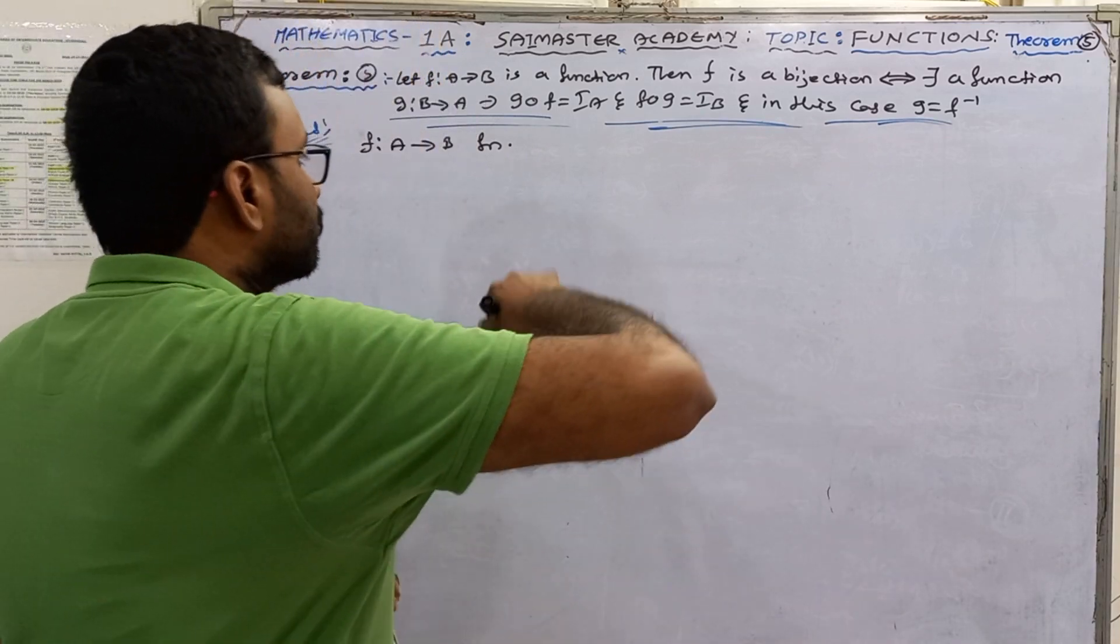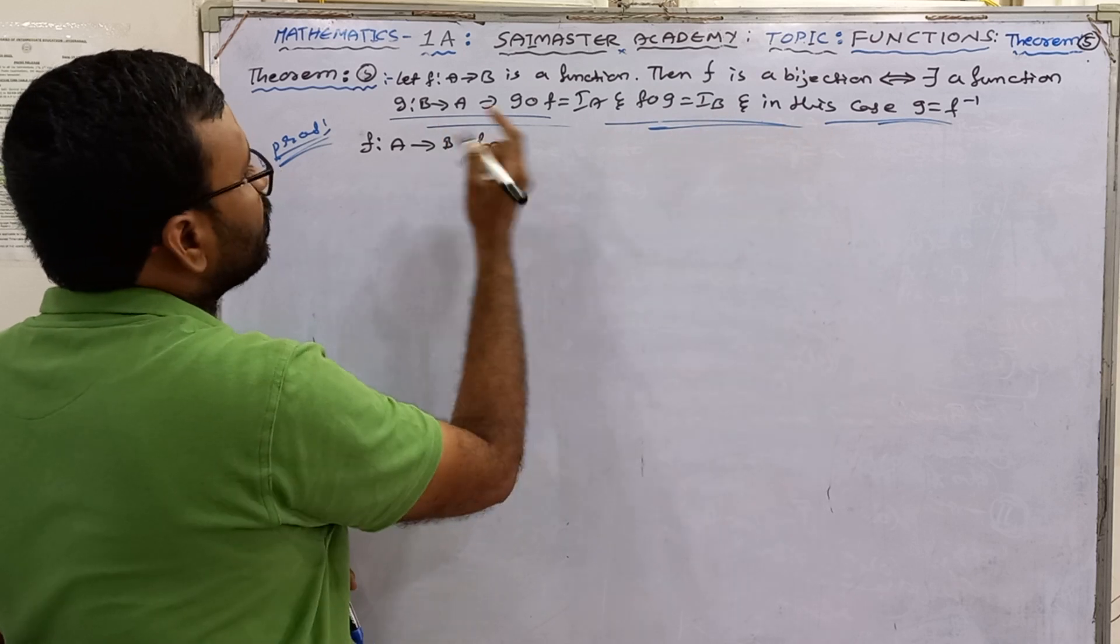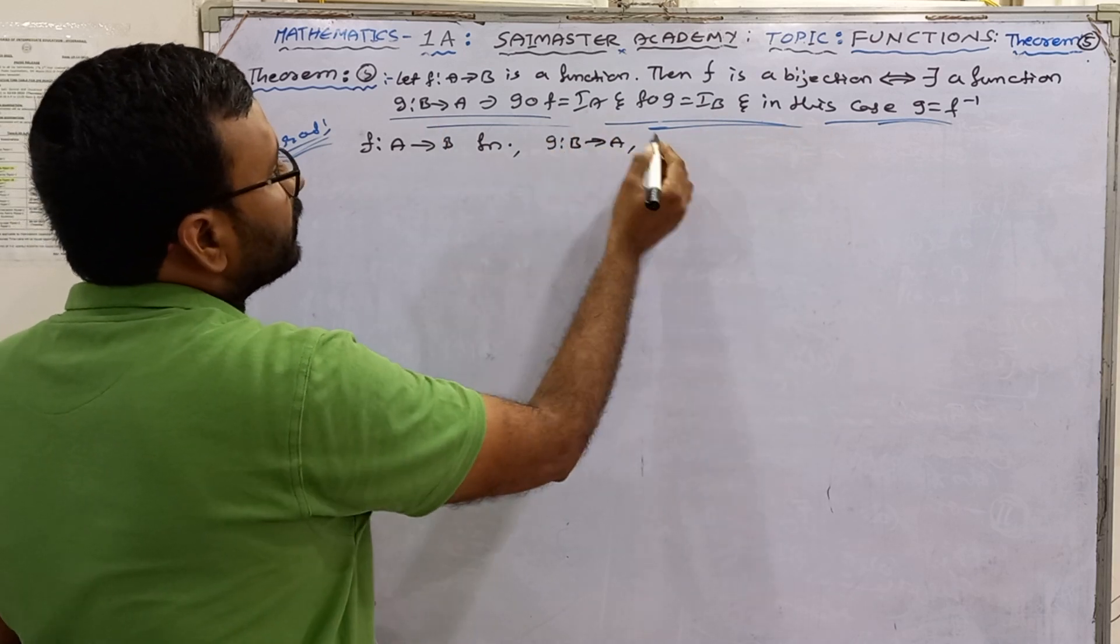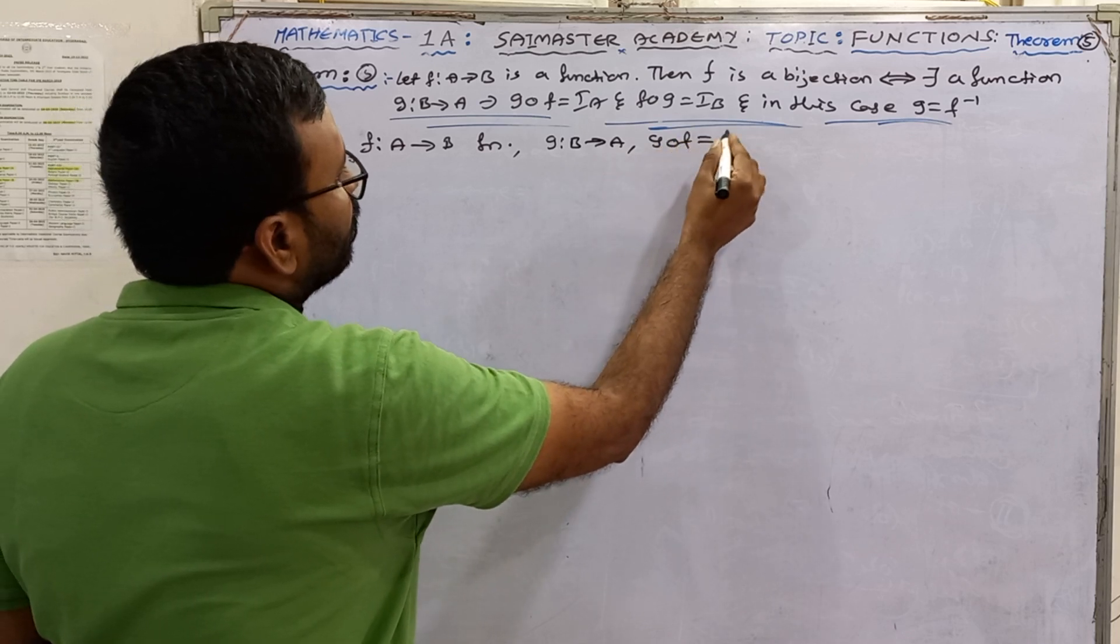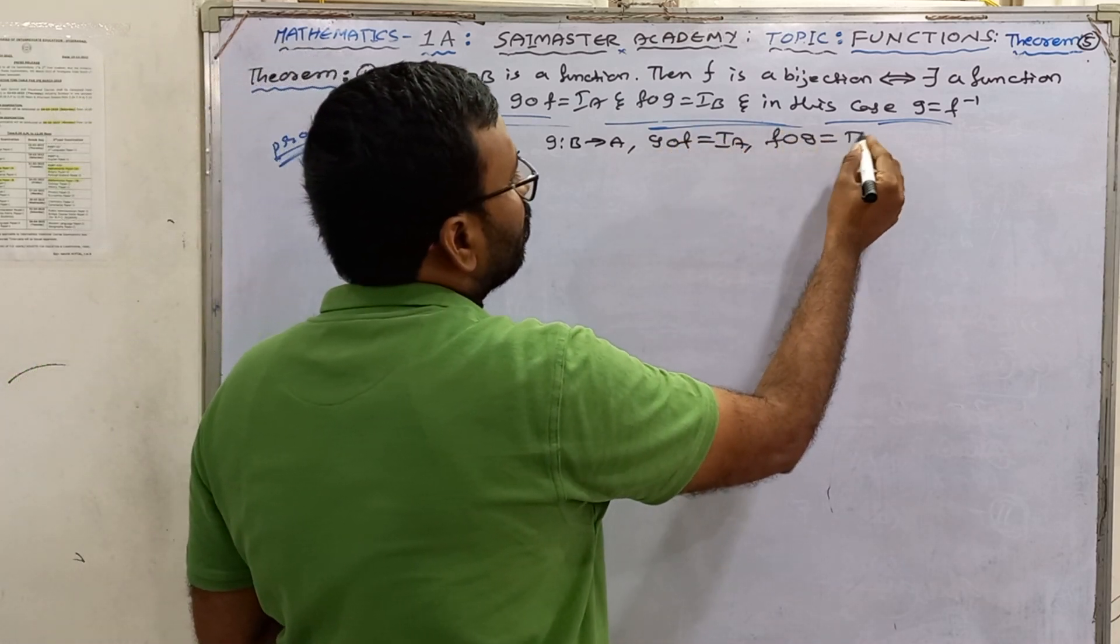So first bijection. I am writing proof. What is given? G from B to A, and G circle F is equal to I_A, and also F circle G is equal to I_B.